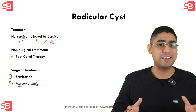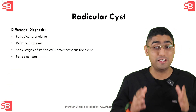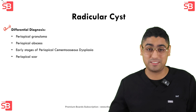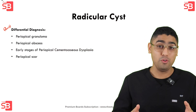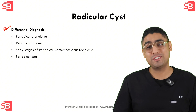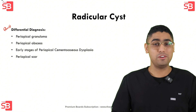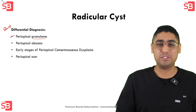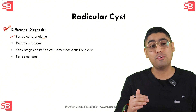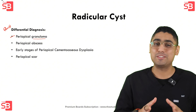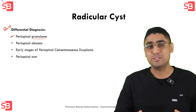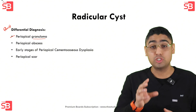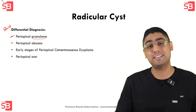Now let's talk about differential diagnosis — it is very important to know how a radicular cyst may be confused with other cysts or lesions. First, we have periapical granuloma. Like a radicular cyst, it is a chronic inflammatory lesion that forms at the apex of a non-vital tooth. However, a granuloma does not have the epithelial lining that defines a cyst — so it is more of a soft tissue lesion. Radiographically, granulomas tend to be smaller and less well-defined than cysts.